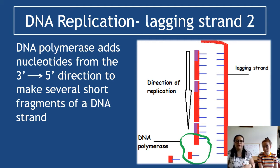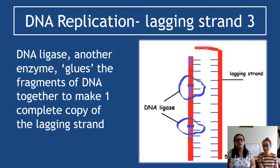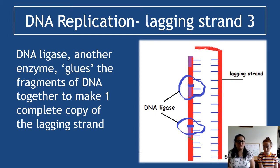DNA polymerase adds nucleotides until it reaches the end or a new primer, then stops, jumps over that primer and restarts — still replicating from 3' to 5' each time. Instead of one smooth continuous new strand like on the leading strand, we end up with several short fragments with small gaps between them. You can see in the diagram the primers in purple and the new nucleotides in red forming the sugar-phosphate backbone, with gaps between the fragments. This is where DNA ligase comes in.